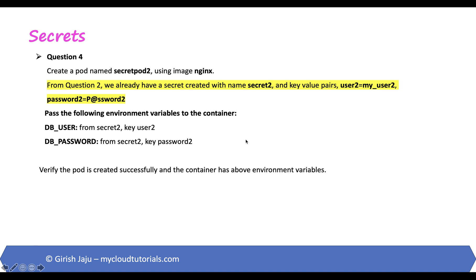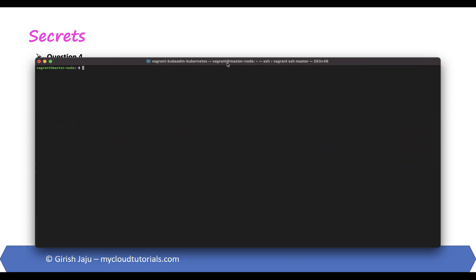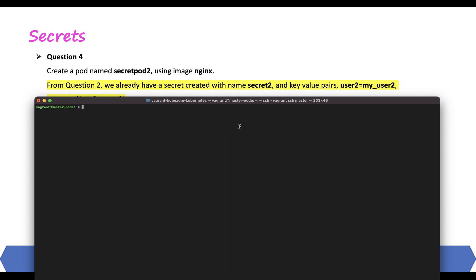Let's look at the next question. Create a pod named secret-pod-two using image nginx. From question two we already have secret-two created. Pass the following environment variables to the container: DB_USER from secret-two key user-two, and DB_PASSWORD from secret-two key password-two. Verify the pod is created and the container has those environment variables. We'll use the imperative command to get the basic config file, then add the additional entries.